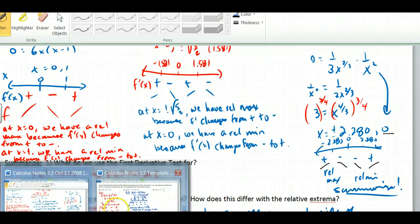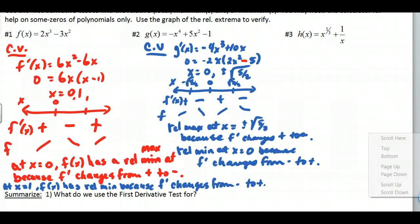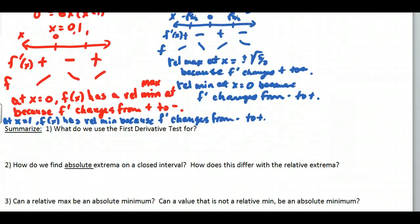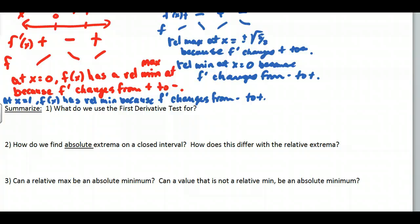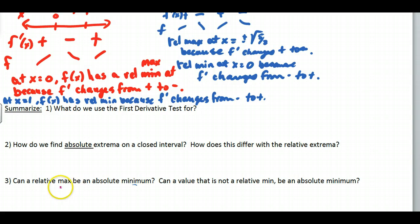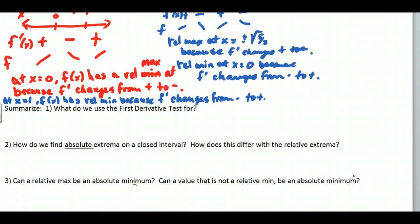The last pieces we'll go through in class, but think about these: What do we use the first derivative test for? How do we find absolute extrema? For absolute extrema — that was section 3.1 — you also have to include endpoints. Can a relative max be an absolute min? No — because the points around a relative max are less than the max, so it can't be an absolute min. Can a value that is not a relative min be an absolute min? Yes — it turns out to be an endpoint. That's the end of section 3.3, the first derivative test. We'll be using this one quite a bit, along with increasing and decreasing. Thanks, have a great day.